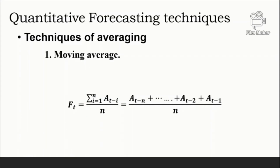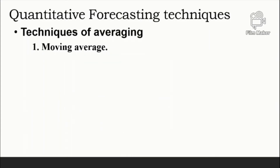The moving average forecast can be computed using the equation: Ft equals the summation of A(t minus i) divided by n, where Ft is the forecast for time period t, A(t minus i) is the actual value in period t minus i, and n is the number of periods in the moving average.